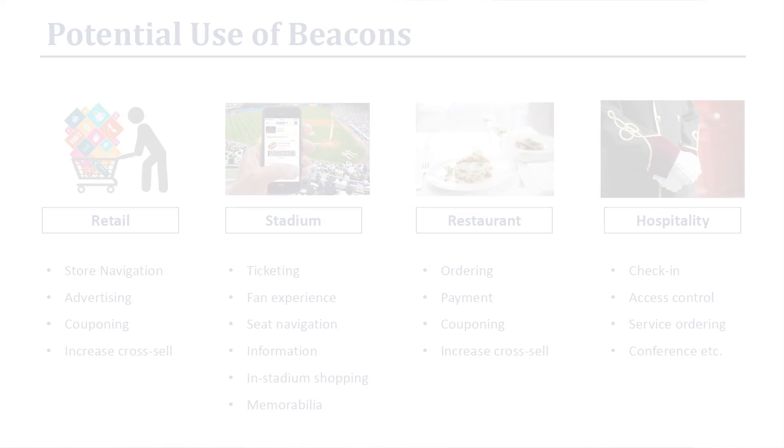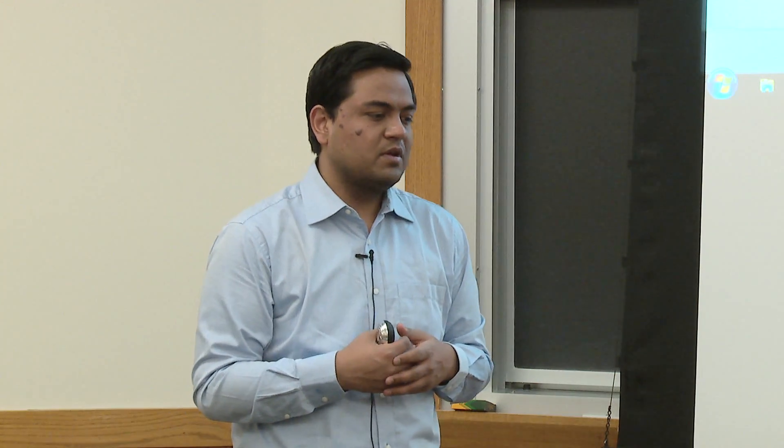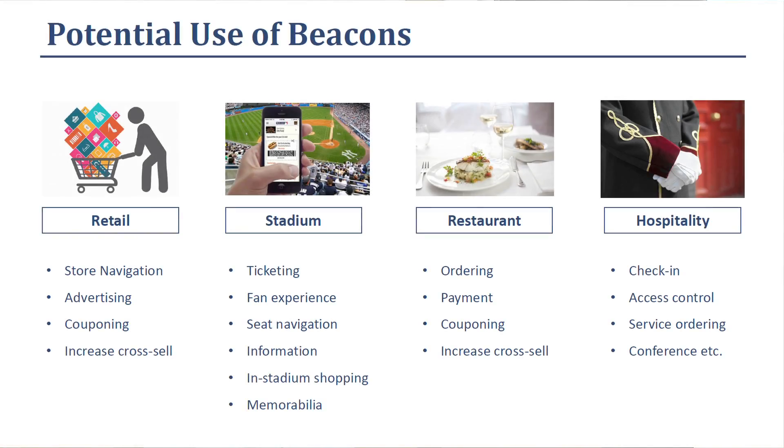In terms of restaurants, there is a lot of potential usage — trying to figure out where an order came from, which table, and so on. Ordering and payment is a huge space. Payment firms like Dash and a couple of others are actually trying to use Bluetooth Low Energy beacons. The goal is to make the user experience as good as possible and increase cross-sell with the restaurants. In terms of hospitality, again, check-ins, automatic check-ins, and access control to gyms and other facilities.